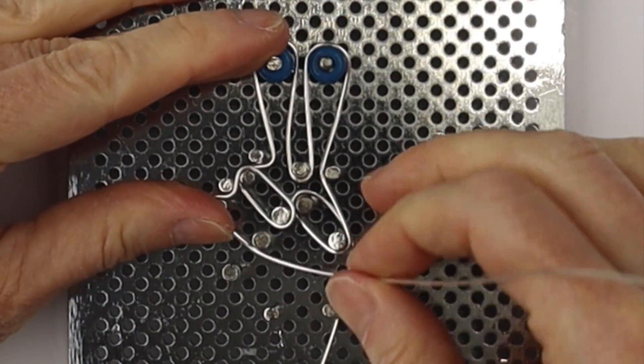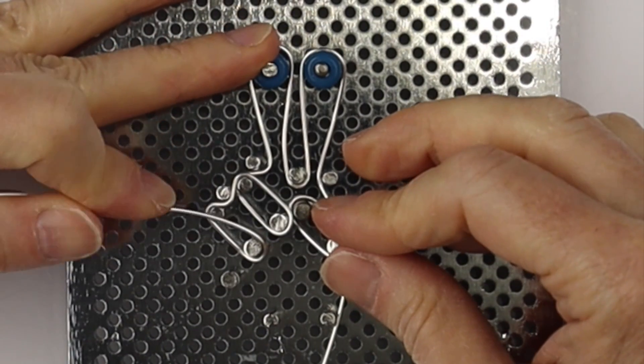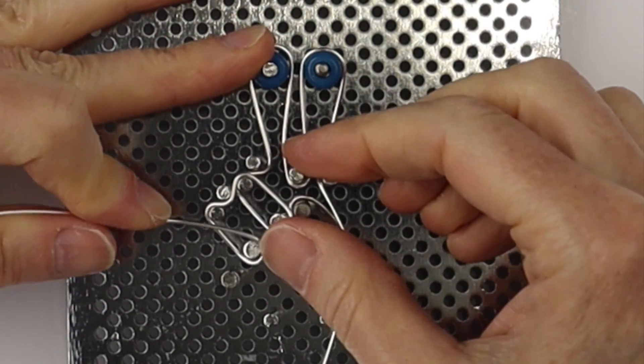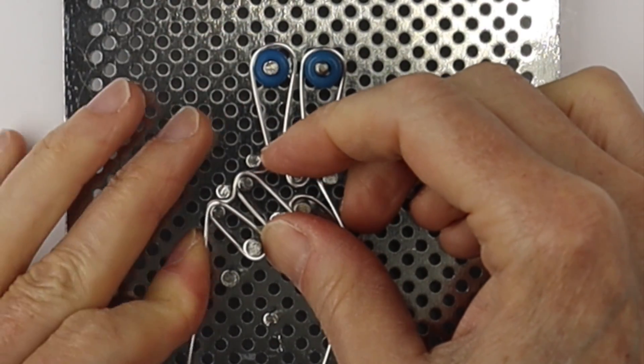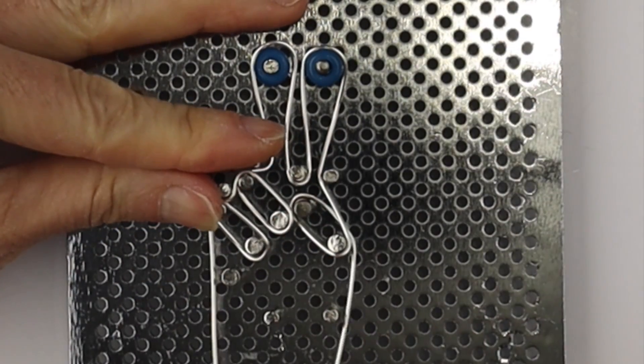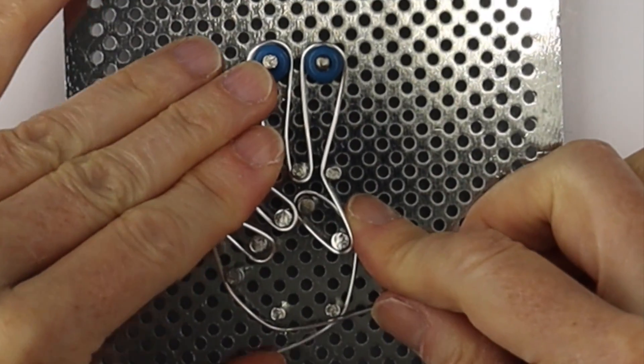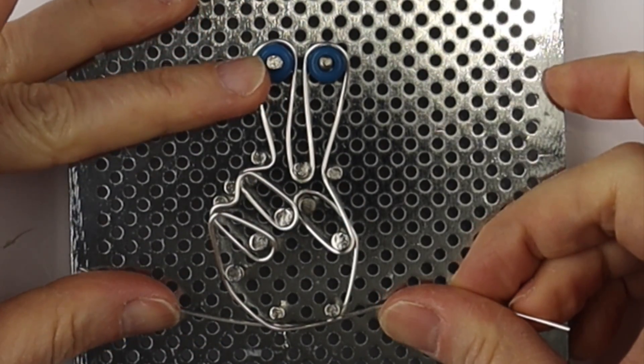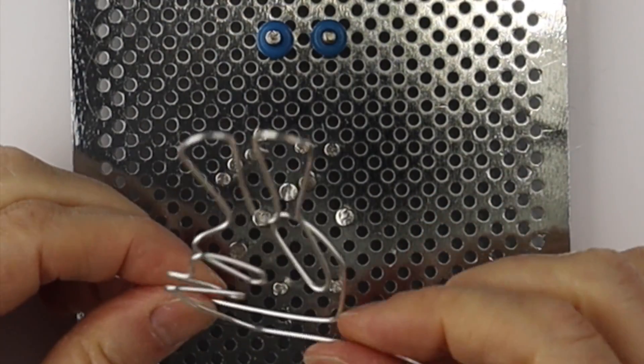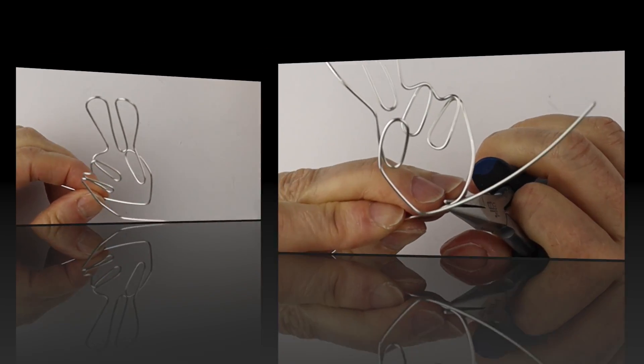I will link up another design with the templates for just a free form one that's a little bit larger. So we're going to bring this one straight down and across. So that's our basic hand shape, very simple. Bring the wires across on either side and then you can remove it from the jig.